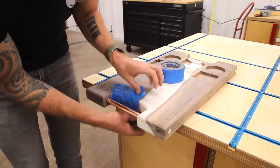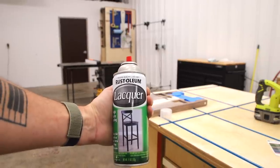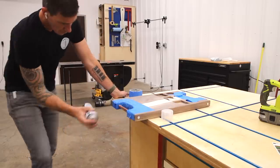Here I taped off the area around the handles and I'll use this spray lacquer to finish the handles and a couple coats should keep them looking nice and shiny.